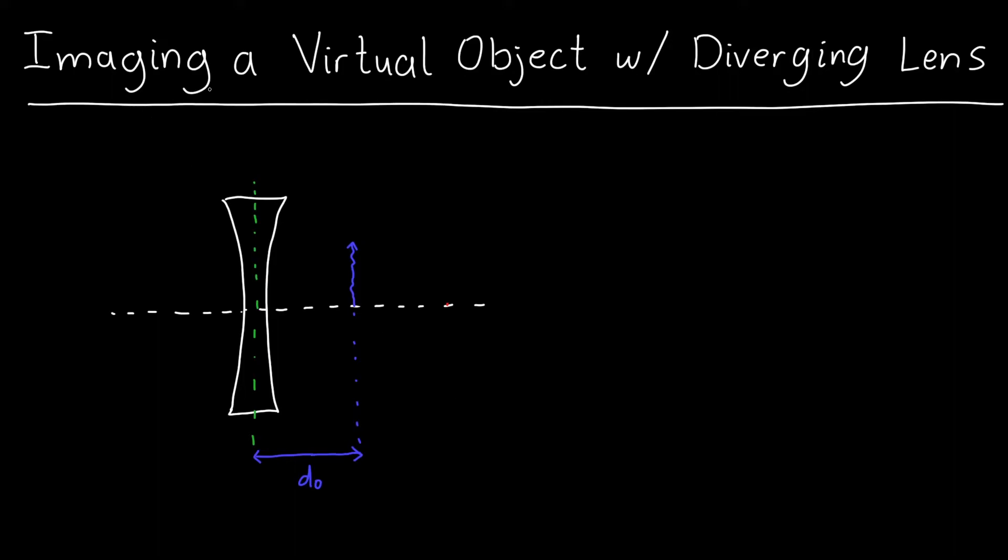In this video, we're going to learn how to image a virtual object through a diverging lens. And so here, let's say that we've got a virtual object which is to the right of our diverging lens.